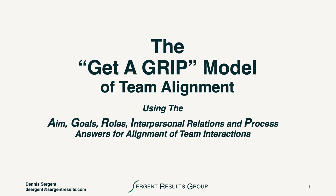Hi, this is Dennis Surgent. I'm here to talk to you about the Get-A-Grip model for team alignment. It's an opportunity for us to think about how we align the team interactions using the aim, the goals, the roles and responsibilities, as well as the interpersonal relations and processes of the team.